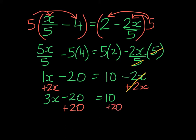This leaves us with 3x equaling 30. And our last inverse operation would be to divide by 3. And we would get x is equal to 10.